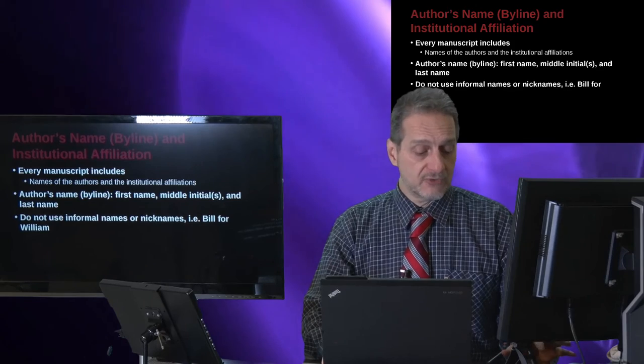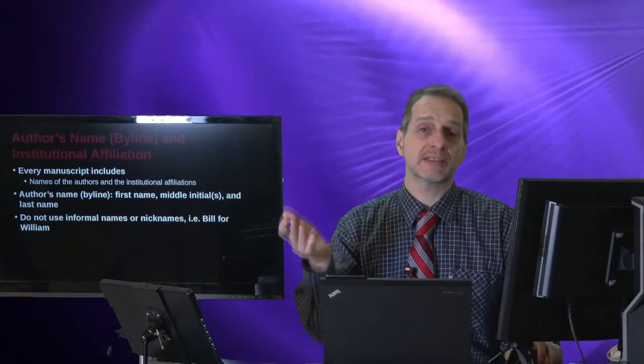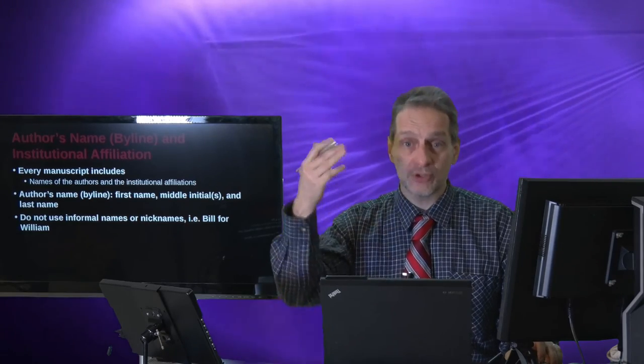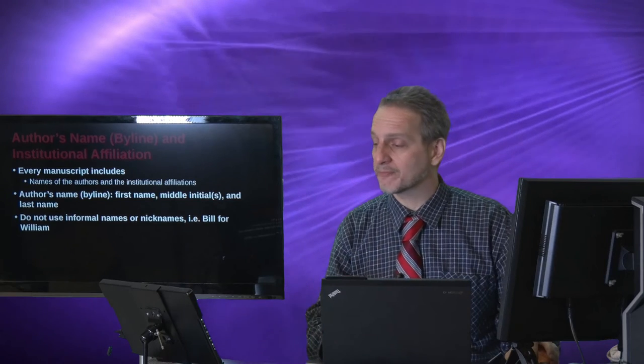Do not use informal names or nicknames. So for example, if someone's name is William, you must write William. You would not write Bill, even though that person may be often referred to as Bill. You should be writing William. Now, of course, as with all these rules, things can change. It depends on the journal, depends on the context. If there was someone whose name is Bill, they always use Bill, they don't use William. Well, then in that case, you may be using Bill.